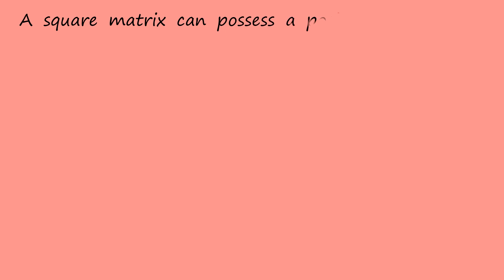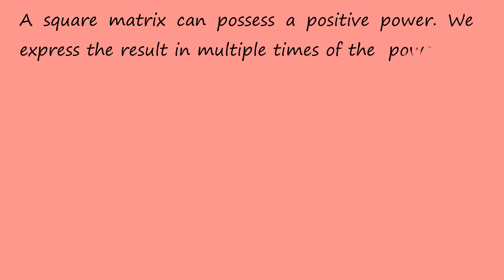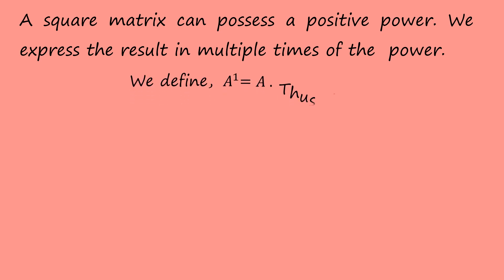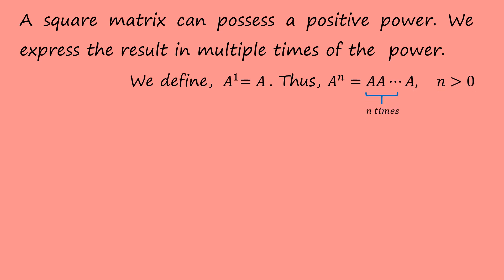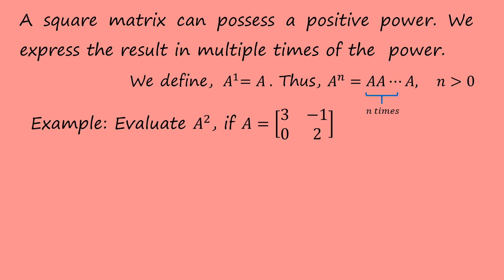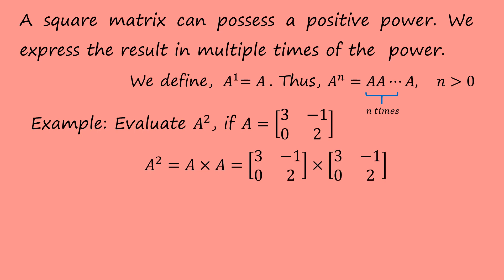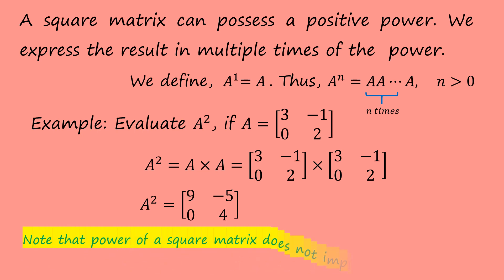A square matrix can possess a positive power. We express the result as the matrix multiplied by itself the corresponding number of times. We define A to the power of 1 to be A, and A to the power of n to be A multiplied n times. For example, to evaluate A squared where A is a 2 by 2 matrix, A squared equals A multiplied by A, giving the 2 by 2 matrix [9, -5; 0, 4].